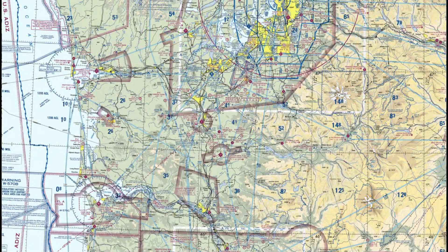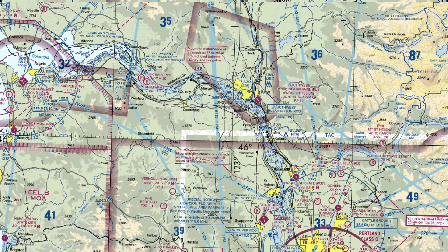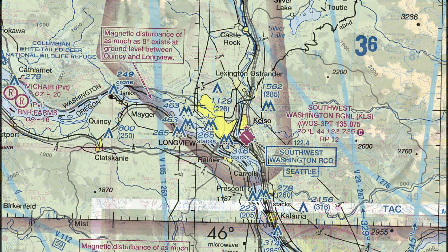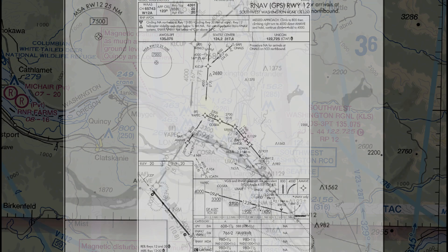This simulated approach is at Kelso, Washington, which lies about halfway between Seattle and Portland, where the Columbia River makes its final westward turn toward the Pacific coast at Astoria, Oregon. The RNAV GPS runway 1-2 approach can be challenging.